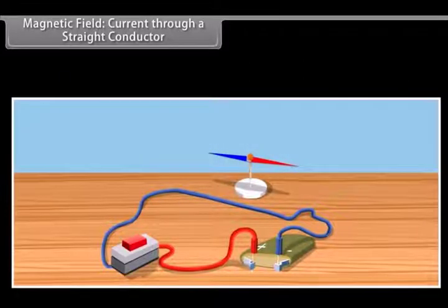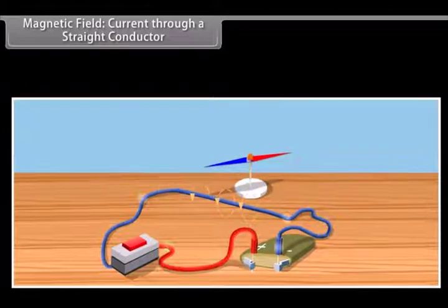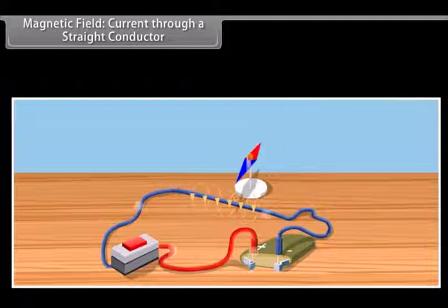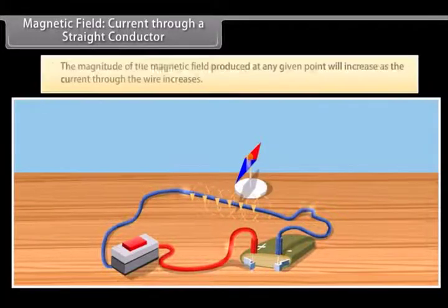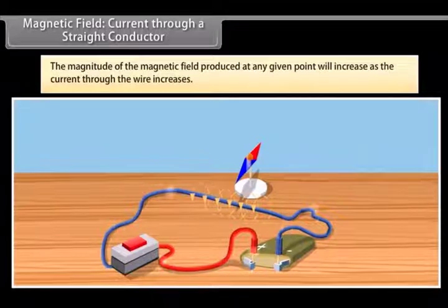Magnetic field: Current through a straight conductor. As you have seen earlier, let us see what happens when we change the current that is passing through the wire. The effect on the compass also varies. So, if you increase the current, the deflection of the needle of compass will increase. From this we know that the magnitude of the magnetic field produced at any given point will increase as the current through the wire increases.